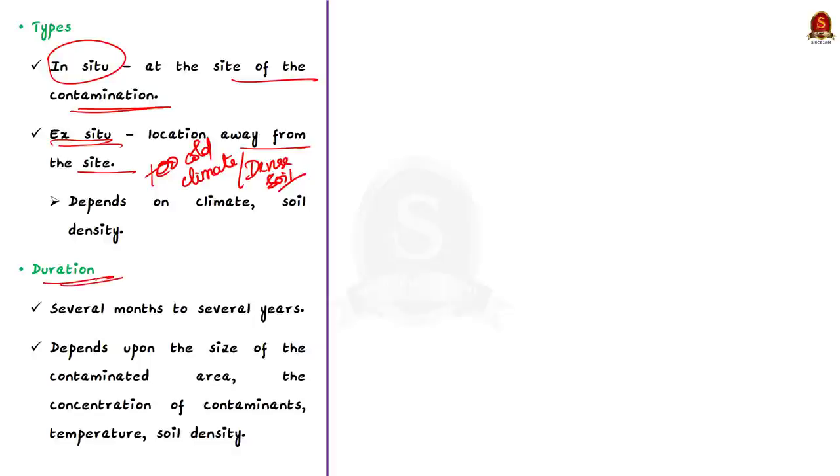Now, let us move on to see the duration taken for the bioremediation process to complete. The bioremediation process may take anywhere from several months to several years to complete and it depends upon variables such as size of the contaminated area, the concentration of the contaminants, temperature, soil density, and whether bioremediation will occur in in situ or ex situ mode. This is all about bioremediation.